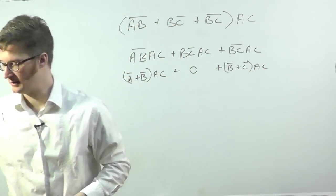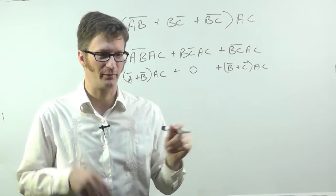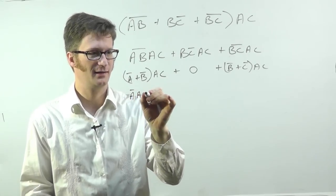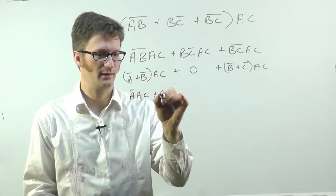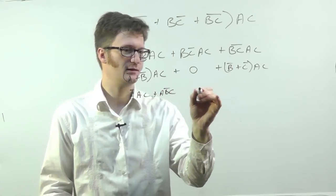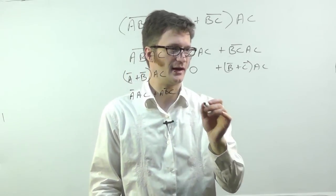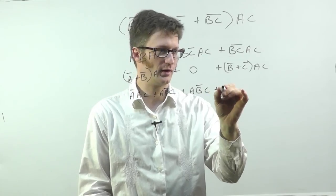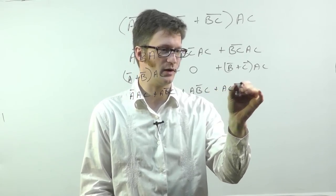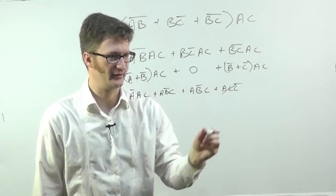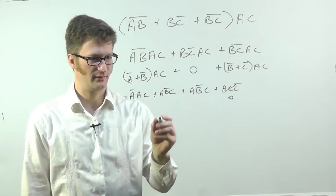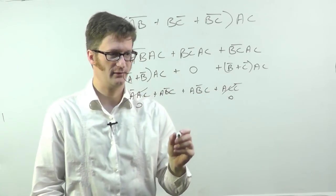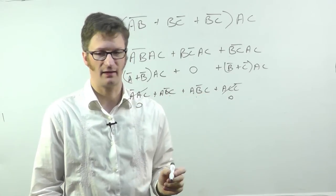And this one, I don't know what's going on yet, so I'm going to apply DeMorgan's. Okay. Now we're going to multiply it out again. So we've got A bar A C or A B bar C, and we'll just skip that guy, or A B bar C or A C C bar. All right. Once again, this one goes to zero. This one goes to zero, and we've got these two are exactly the same.